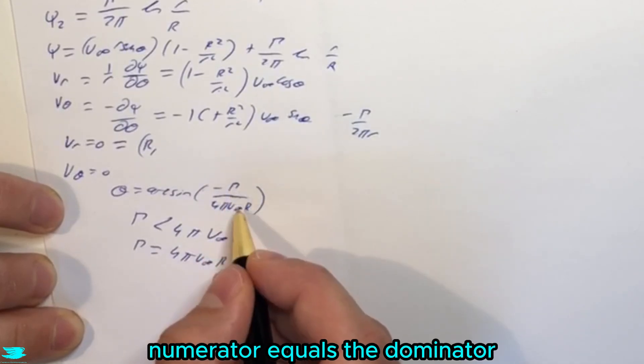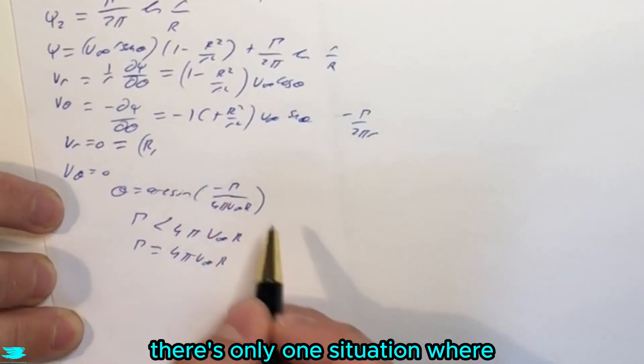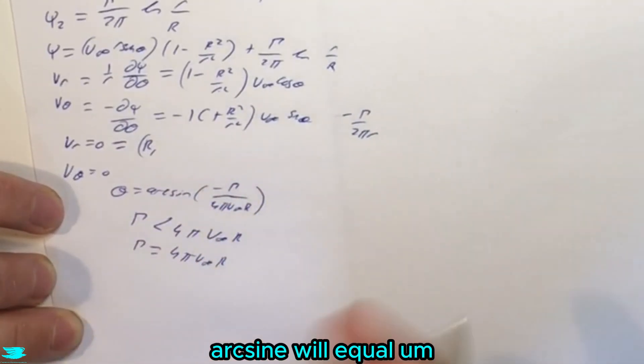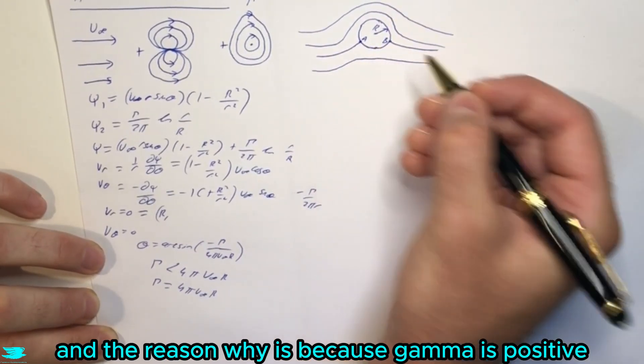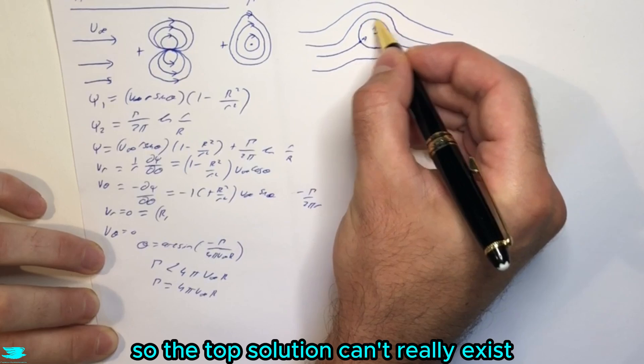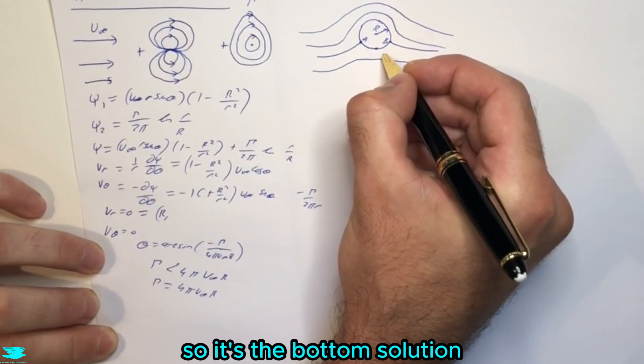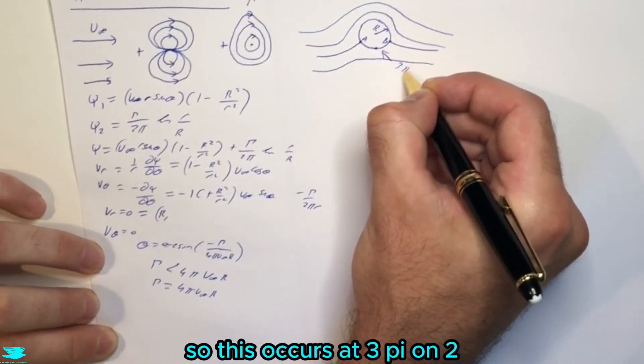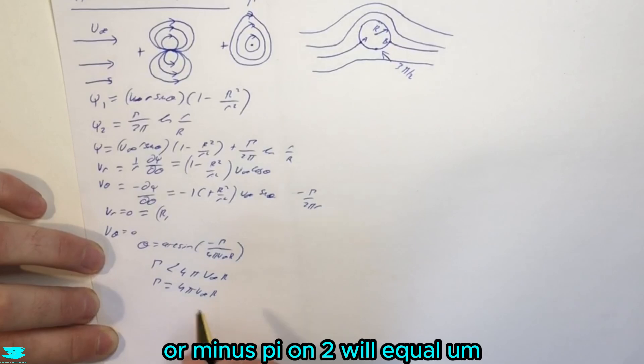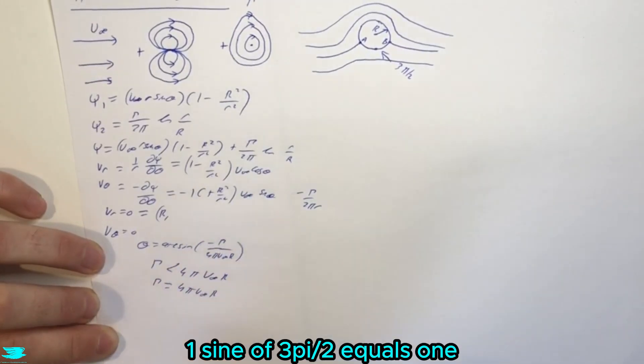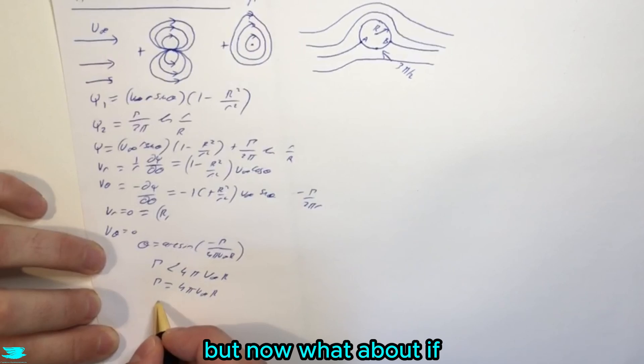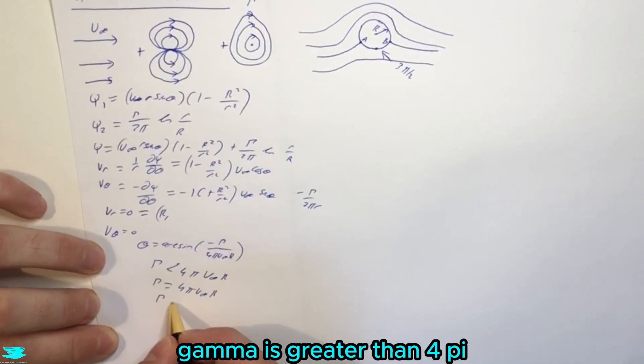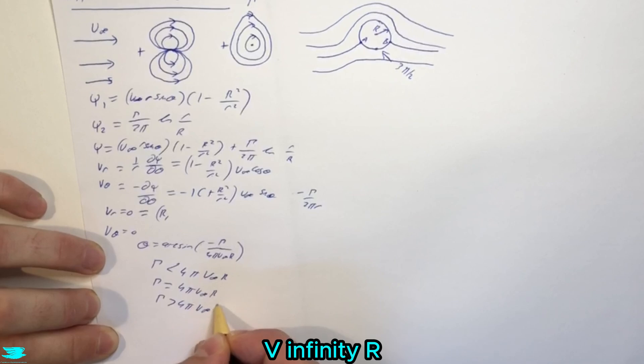But what about when gamma now equals 4 pi v infinity R? So in other words, the numerator equals the denominator. There's only one situation where arc sine will equal this theta, and that is on the bottom here. And the reason why is because gamma is positive, so the top solution can't really exist, so it's the bottom solution. So this occurs at 3 pi on 2, or minus pi on 2, will equal 1. Sine of 3 pi on 2 equals 1.